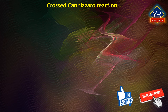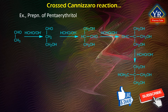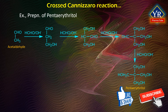An interesting example of such a crossed Cannizzaro reaction combined with aldol condensation is known as the Tollens reaction, and this reaction is used for the preparation of pentaerythritol from acetaldehyde and formaldehyde. This reaction involves three successive aldol condensations of acetaldehyde with formaldehyde. The product has no alpha hydrogens left and is reduced by the formaldehyde to give pentaerythritol.